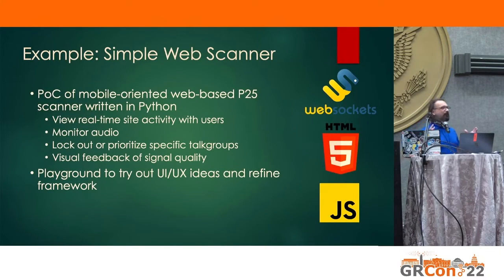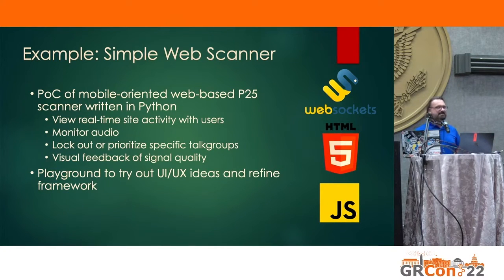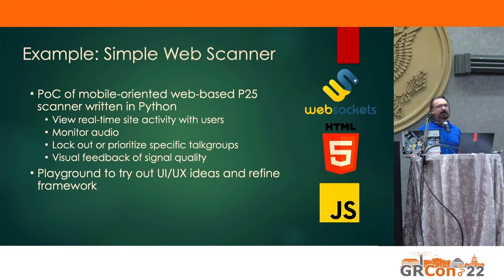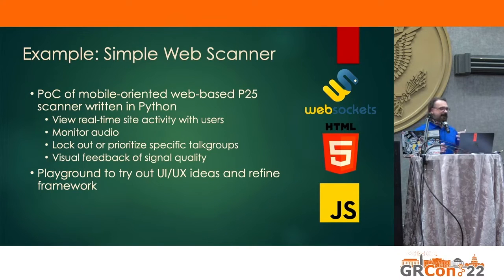What I did with all of this was create a proof-of-concept inching toward a DIY open-source trunked radio scanner with a mobile web-based interface, written completely in Python. It's pretty basic, but it can show real-time site activity with all users on a given tower, monitor audio from those channels, let you lock out or prioritize specific talk groups — which is table stakes for commercial scanners — and provide visual feedback of signal quality for both control and traffic channels.